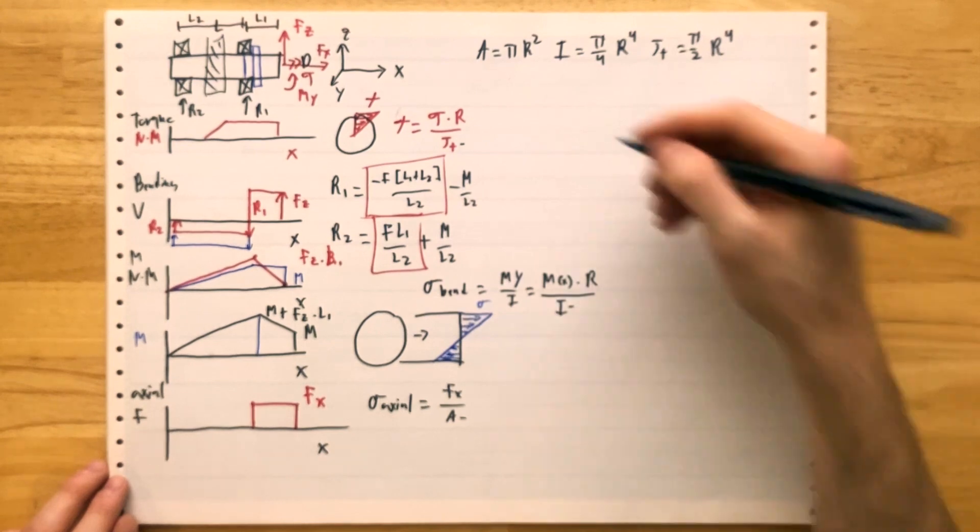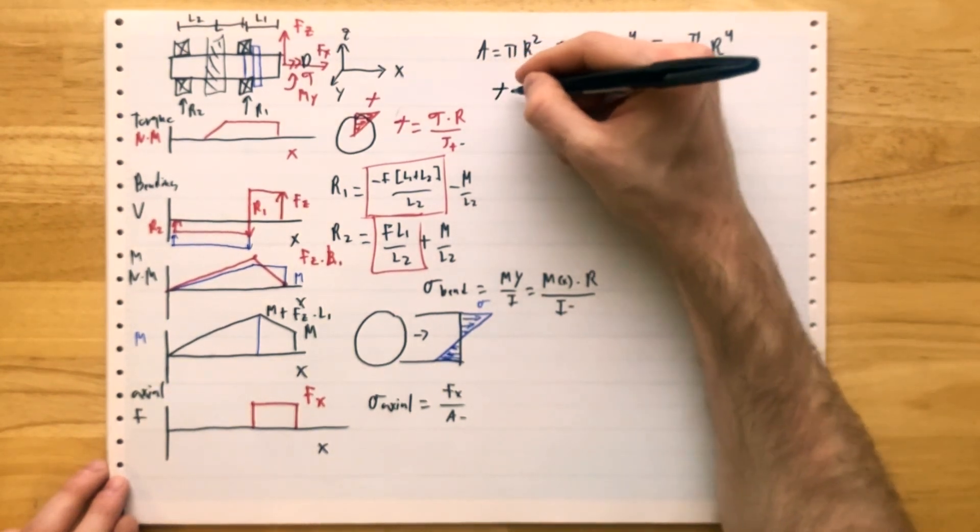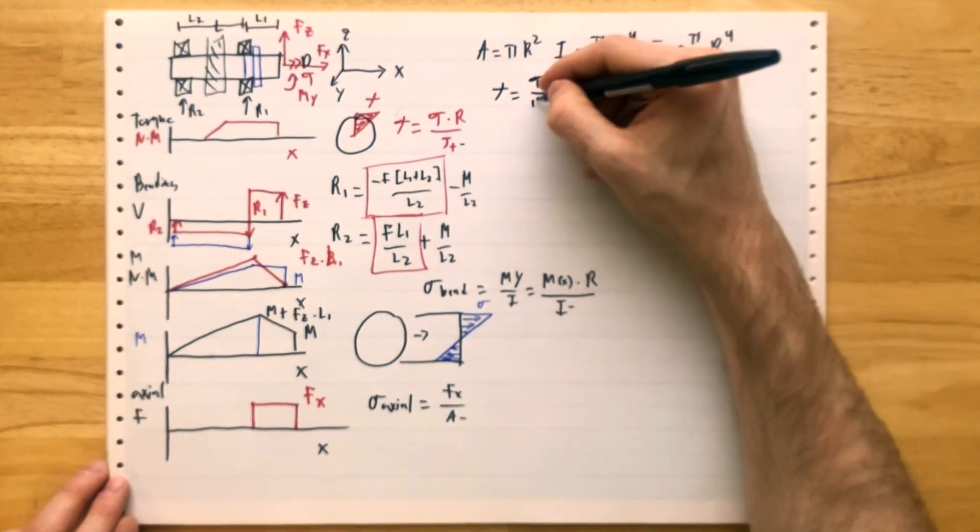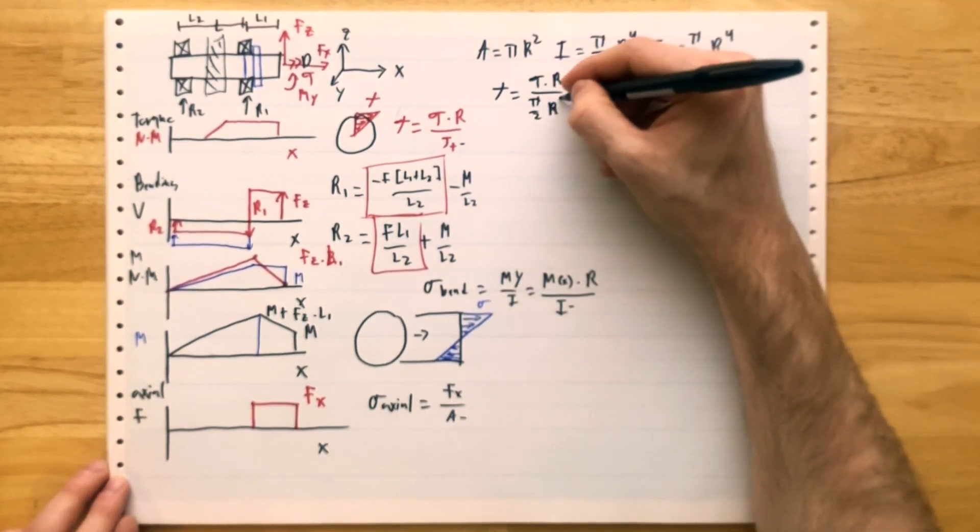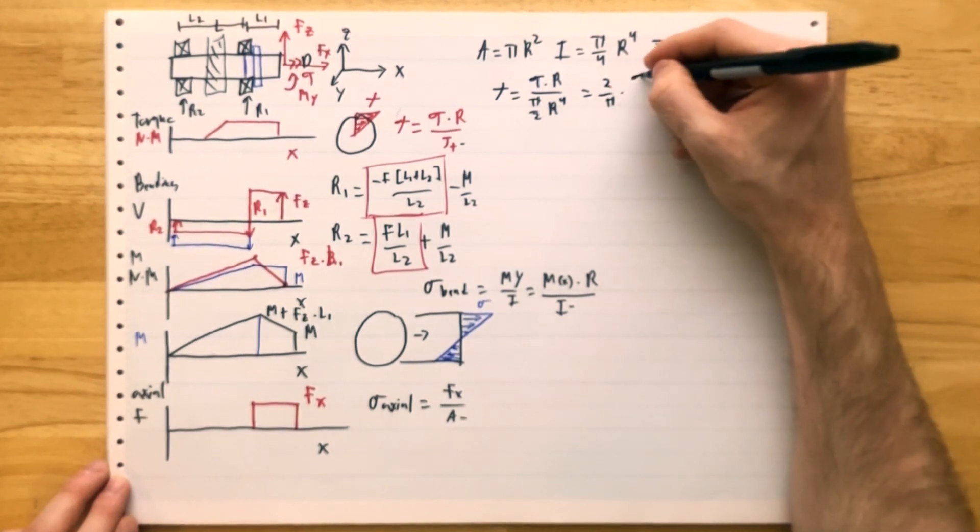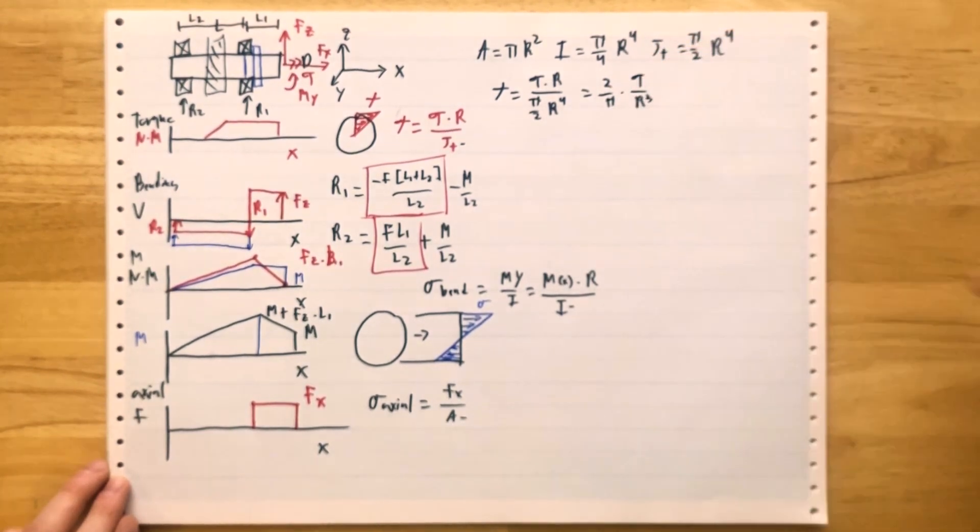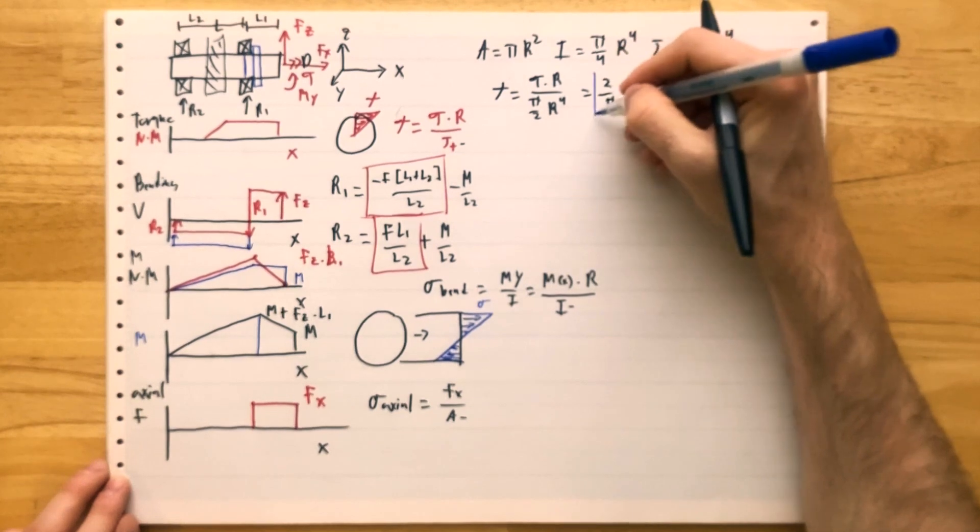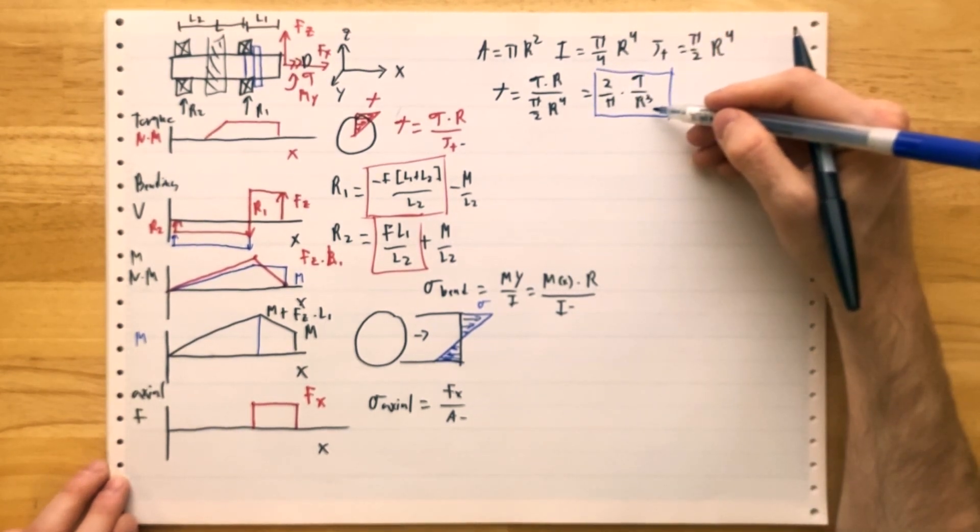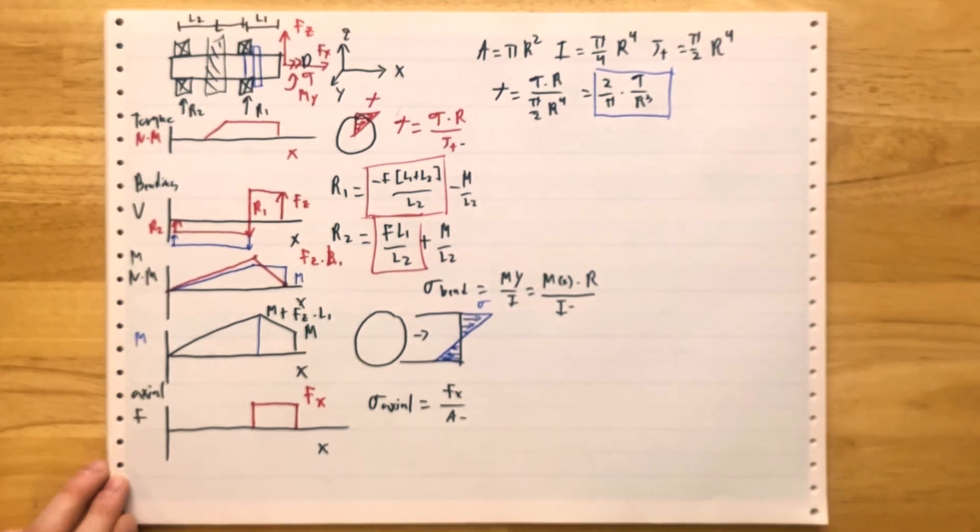So if we're going through the stresses, we find out that the shear is torque times R over pi by 2 R to the 4. That is 2 over pi times torque over R cubed. That's a really big deal. If you make your shaft 10% larger in diameter, your shear stresses go down by 30%. Pretty good bang for the buck.